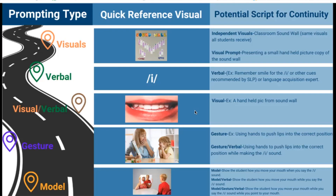A gesture prompt might be that the teacher shows the student the correct placement of the tongue, lips, and teeth, and gives a description — pairing it with a verbal prompt. You might use your hands and say, 'Remember, we smile when we say the E sound,' or you might even help the student move their mouth into that position. You might also describe what the sound is like — 'It's a lip popper,' or 'It's the snake sound.' That can also be paired as a visual-verbal or gesture-verbal prompt.